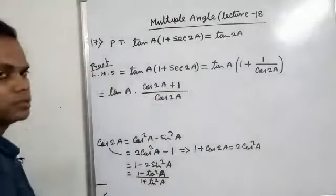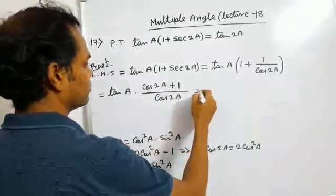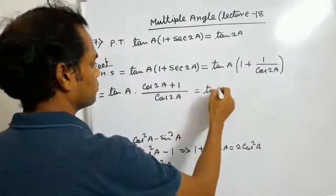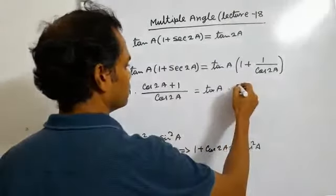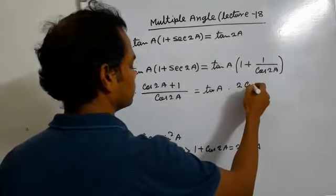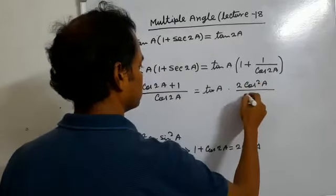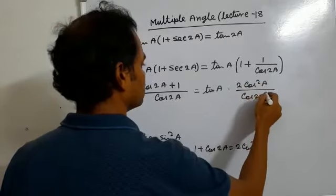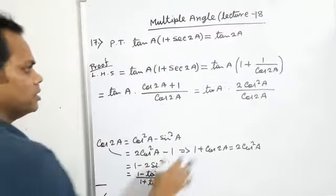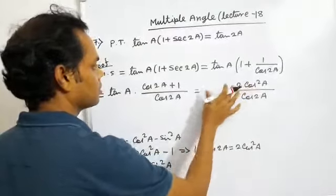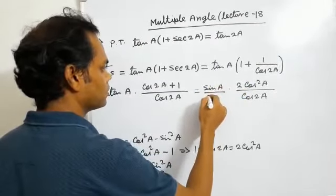So in the place of 1 plus cos 2A, we can write 2 cos squared A. Now this tan A can be written as sin A by cos A.